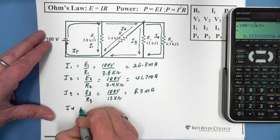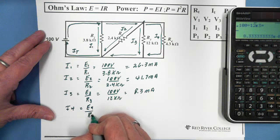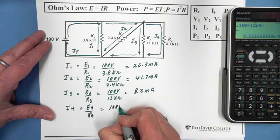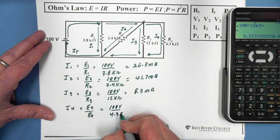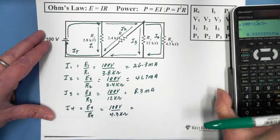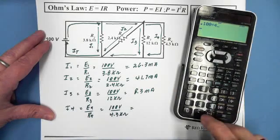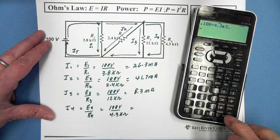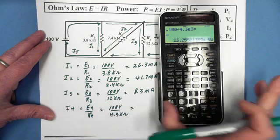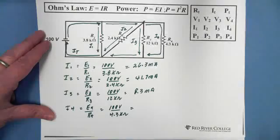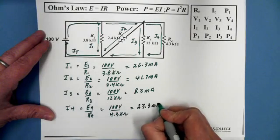I4, V4 over R4, 100 volts over 4.3 kilohms equals 23.3 milliamps.